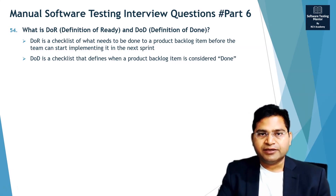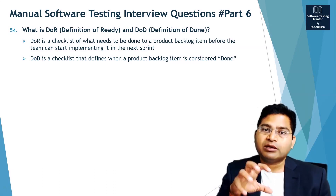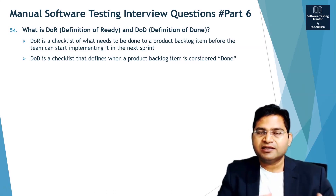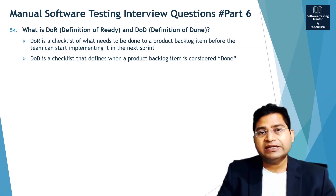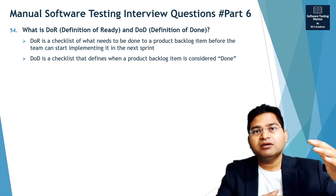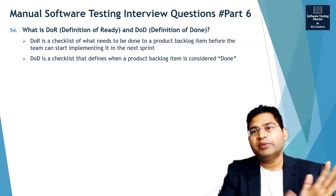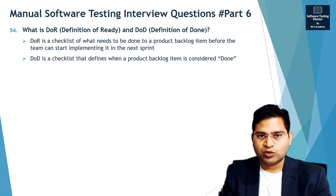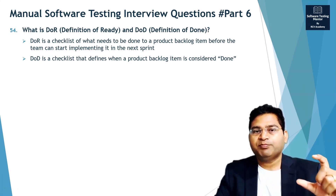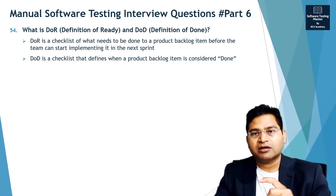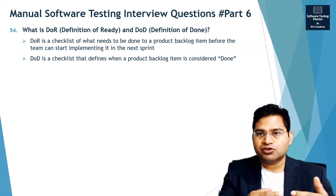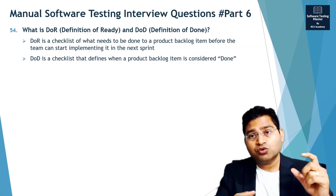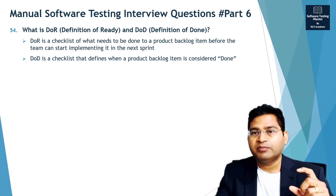Definition of Ready is more applicable to the product backlog — the requirements or stories in the product backlog — and defines what state those product backlog items should be in so the team can start implementing them. In Agile, the product backlog holds high-level requirements, and a small chunk of user stories — maybe four or five — is picked up for a sprint backlog. Definition of Ready defines the state those user stories should be in so the team can straight away start building.